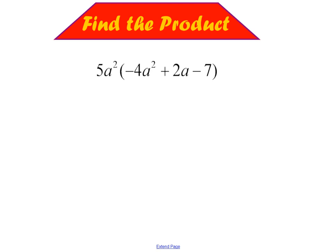We want to find the product. To do that, we need to distribute. When we distribute, we'll go ahead and actually do that to each term. So 5 times negative 4 is going to be negative 20. A squared times A squared is A to the fourth.